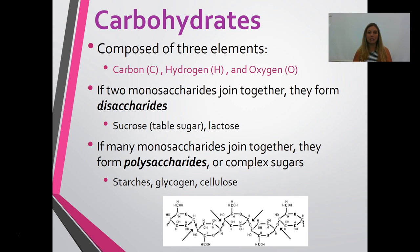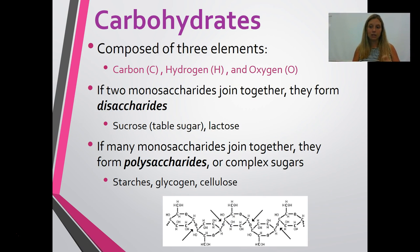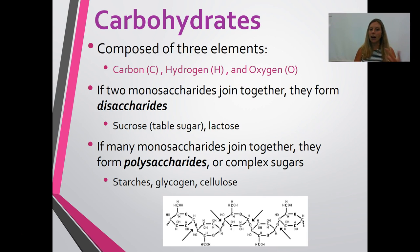Some additional information about carbohydrates: they're composed of three elements — remember CHO: carbon, hydrogen, and oxygen. Monosaccharides are the building blocks — one sugar. Two sugars joined together is a disaccharide, like table sugar or lactose in milk. Many monosaccharides joined together form a polysaccharide — these are your complex starches, glycogen, and cellulose found in vegetables.